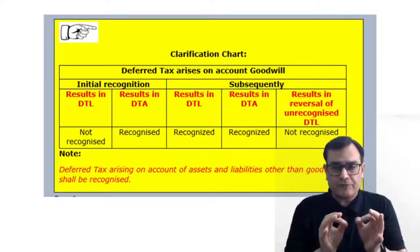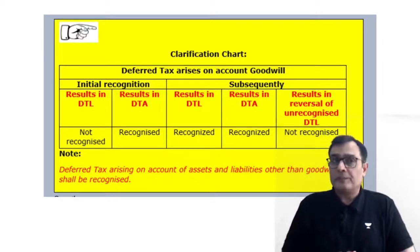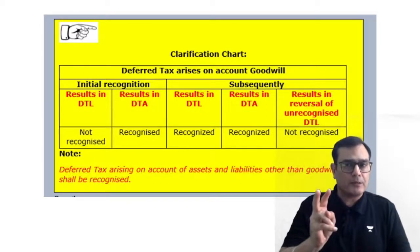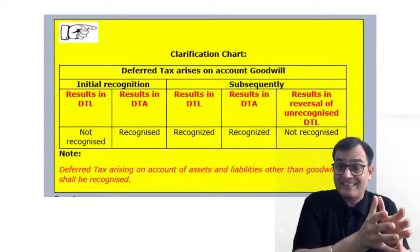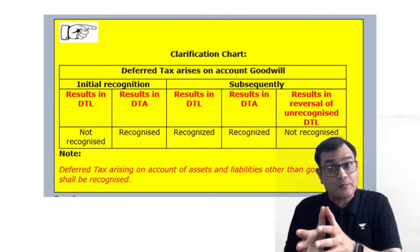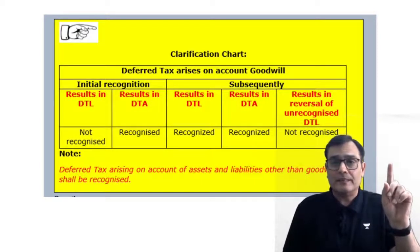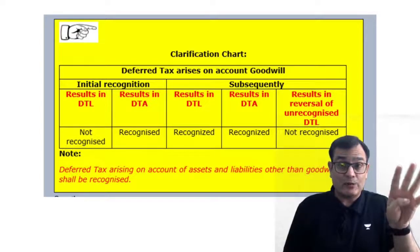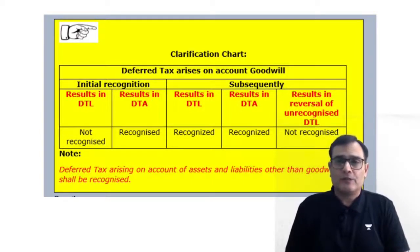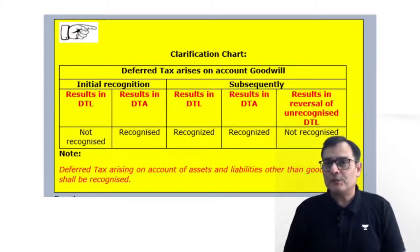Now the question also comes into play: what if the difference doesn't arise at the time of acquisition accounting but arises at a subsequent date? If goodwill results in a DTA or DTL subsequently — not at the time of acquisition accounting — that would be recognized. Let me also clarify: if you did not recognize a DTL today on account of goodwill, then its reversal will also not be recorded. So to summarize: at acquisition accounting, goodwill resulting in a DTL — no. Goodwill resulting in a DTA — yes. Net assets other than goodwill — yes. Subsequently, if there is a DTL on goodwill — yes. But reversal of a DTL which was not originally recognized should not be recognized as a reversal either.